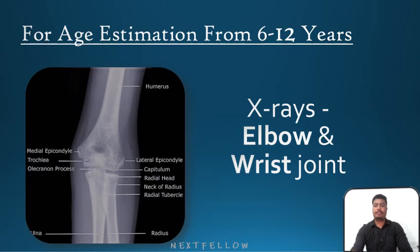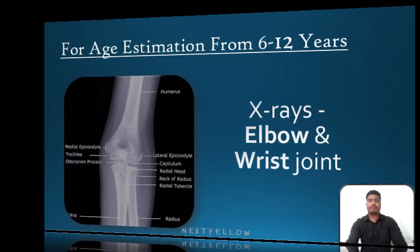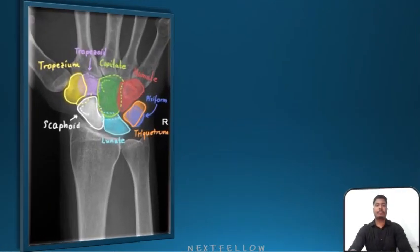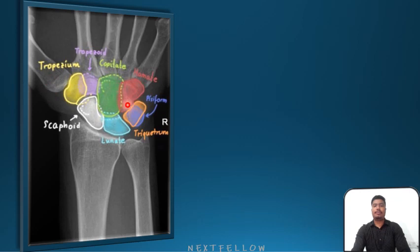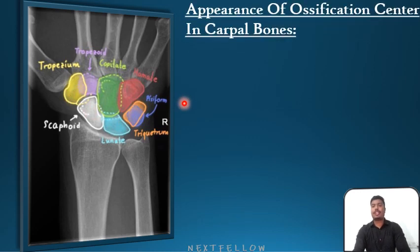This is an x-ray of the wrist joint. You can see the various carpal bones: capitate, hamate, pisiform, triquetrum, lunate, scaphoid, trapezium, and trapezoid. Now, the appearance of ossification centers in carpal bones — we learned this in the previous lecture, but we will revise it here also.